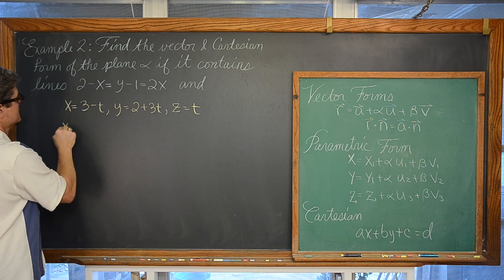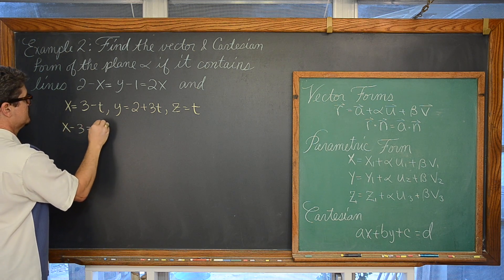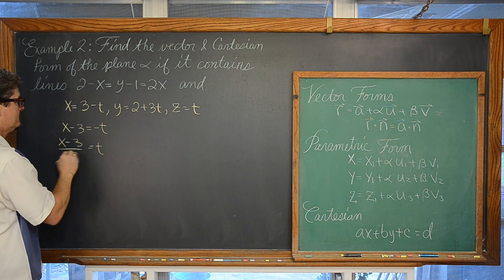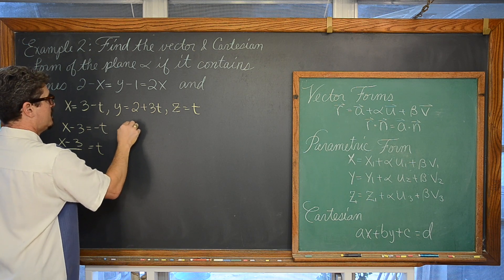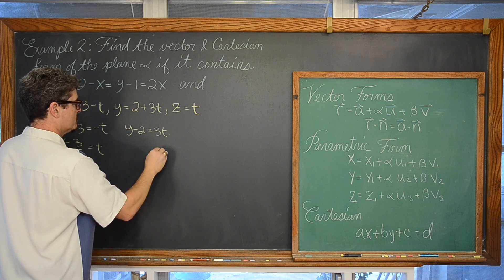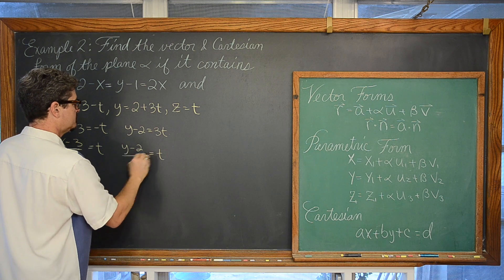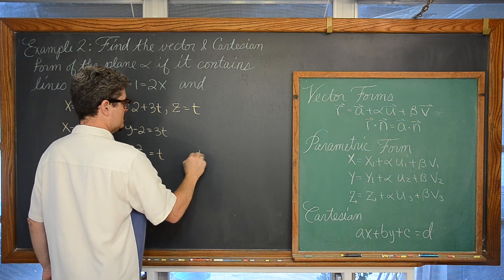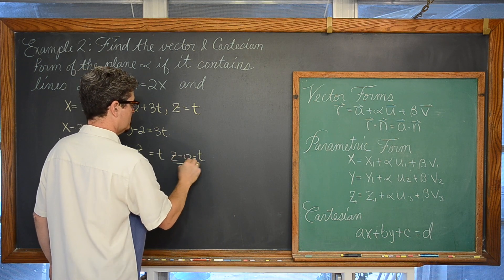From the yellow line: x minus 3 equals negative t, giving us t equals (x minus 3) over negative 1. We have y minus 2 equals 3t, so dividing both sides by 3 gives t equals (y minus 2) over 3. And we simply have t equals (z minus 0) over 1.